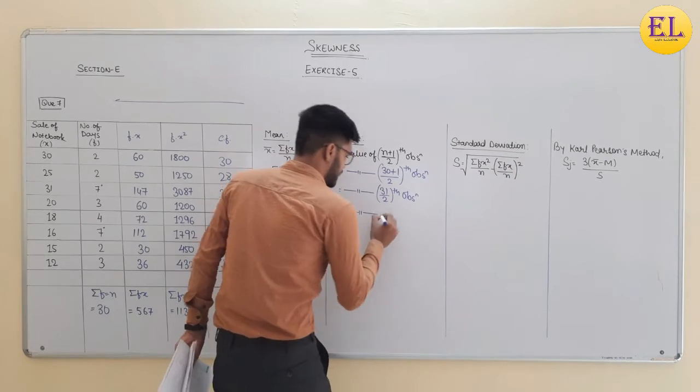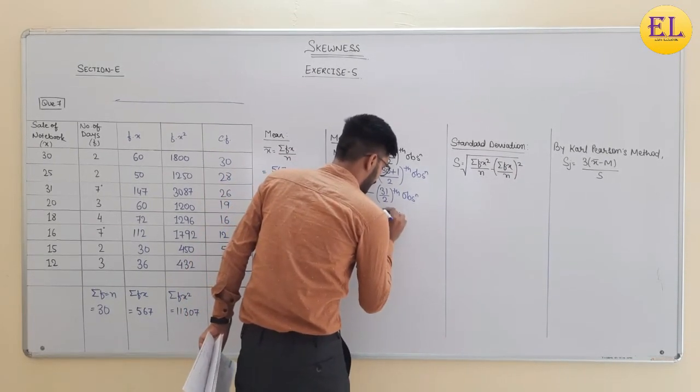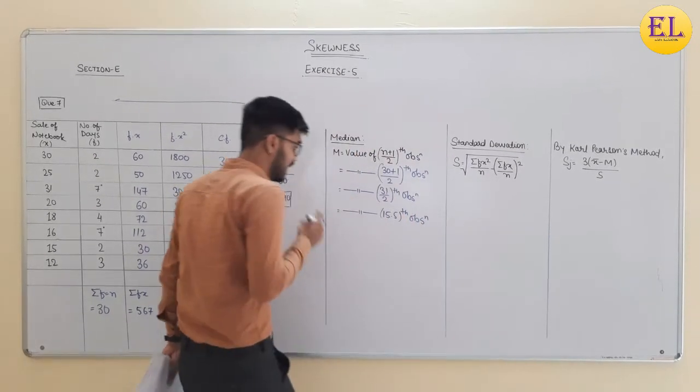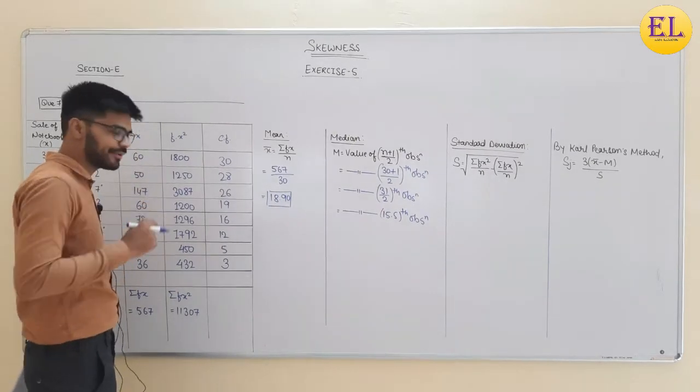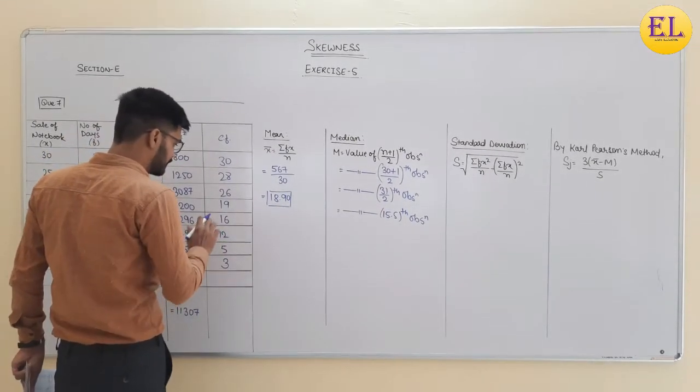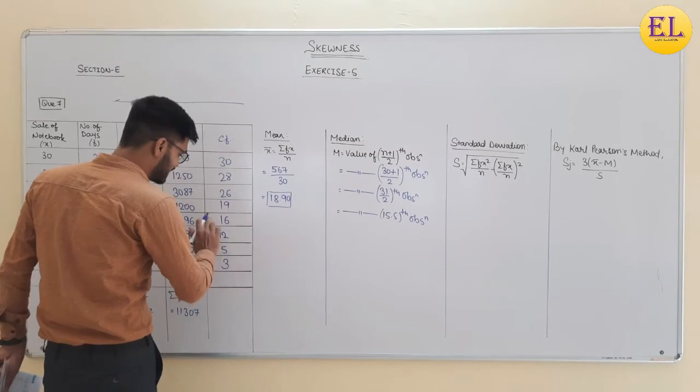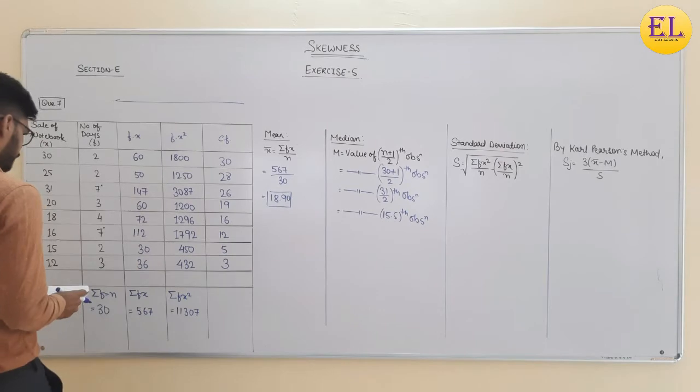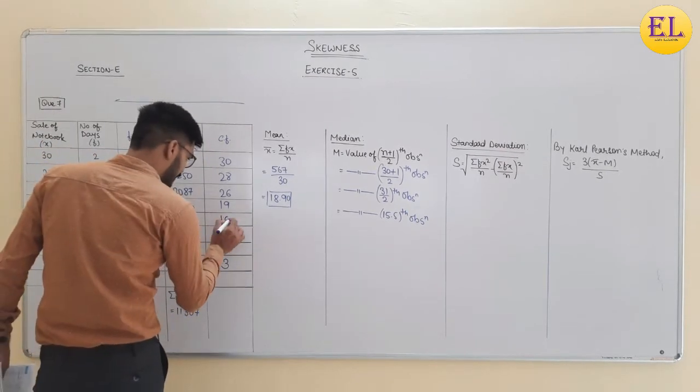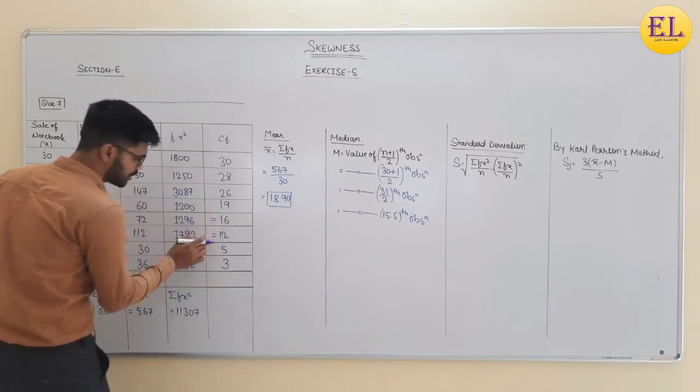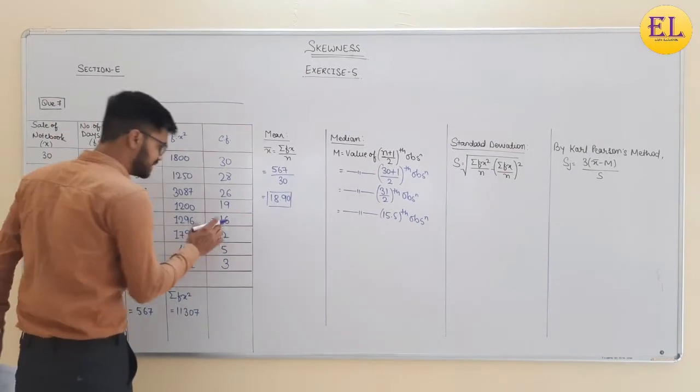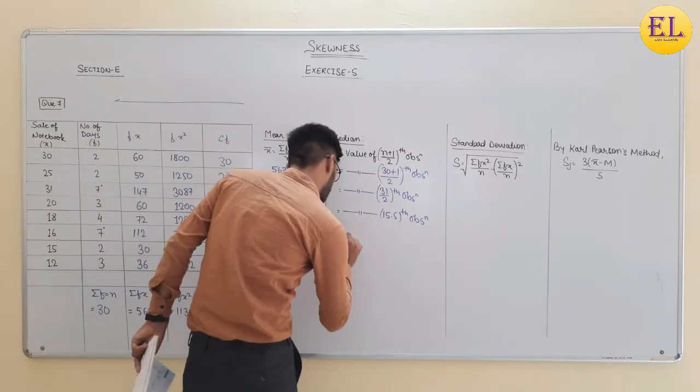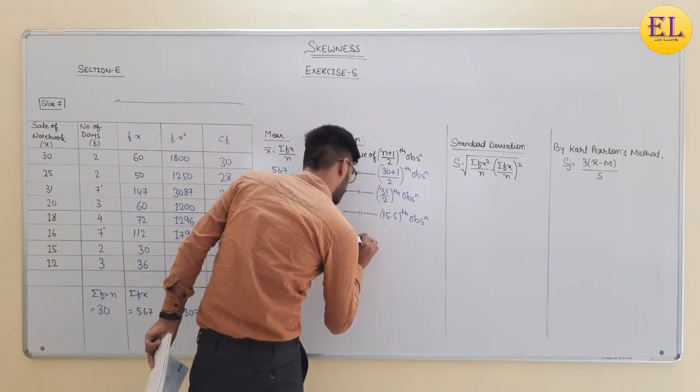For median: n plus 1 divided by 2, that is 31 divided by 2, that is 15.5 observation. Now we can see that 15.5 cumulative frequency is falling between 12 and 16, and we are considering the higher frequency for that. So median is equal to 18.